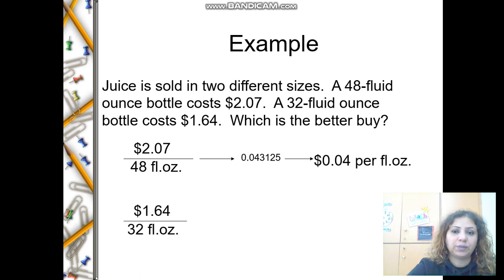To find the unit rate, I'm going to divide the denominators by itself, then divide the numerator by the same number. 48 divided by 48 is 1, and $2.07 divided by 48 gives you $0.043125. The other one is going to be $0.05125 when you divide the denominator by itself.